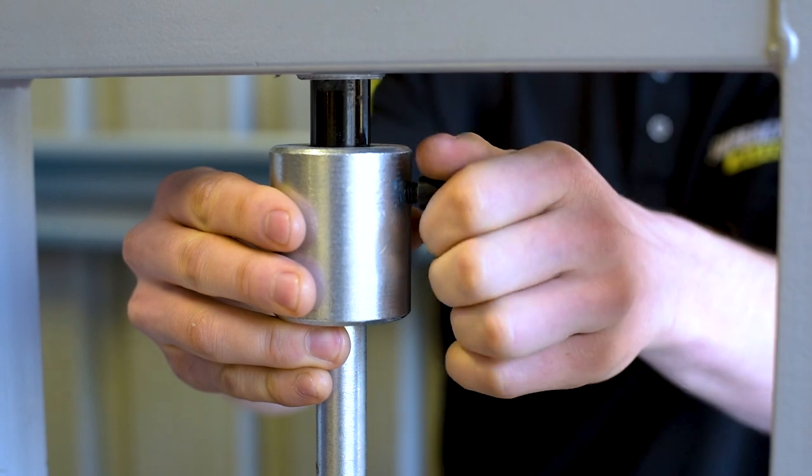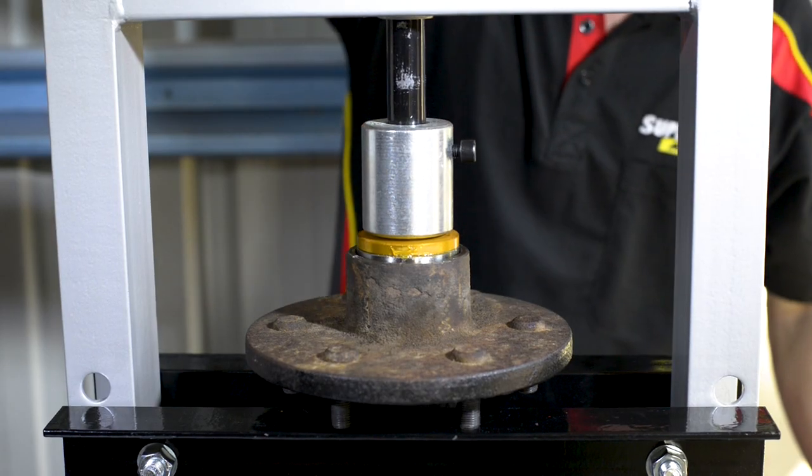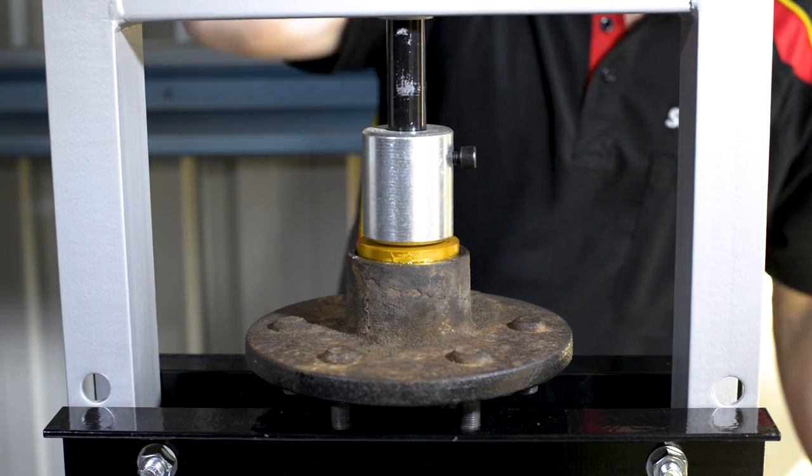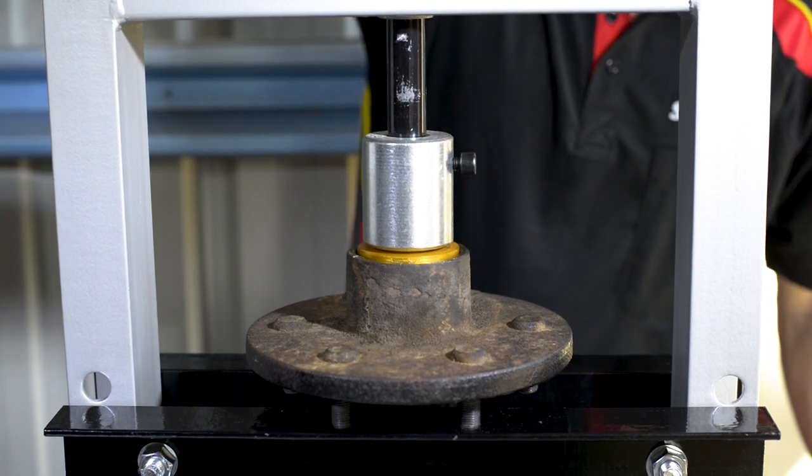These punches are great for removing and inserting bushes, or can even be used with the ToolPro Bearing Race and Seal Driver Kit for easy wheel bearing changes.